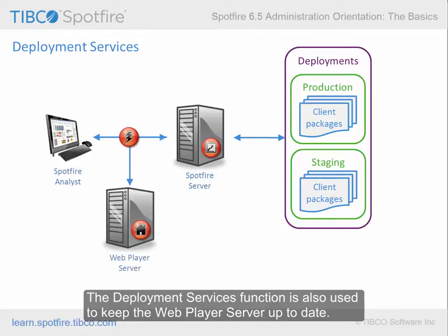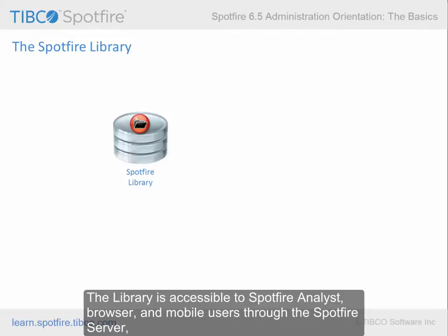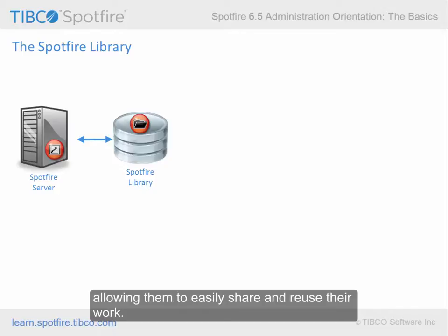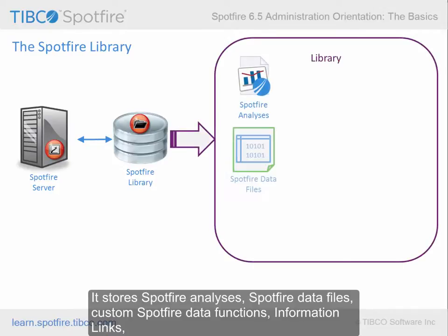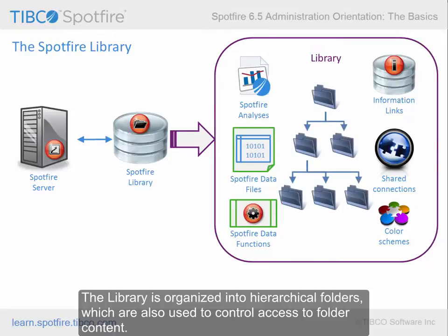The deployment services function is also used to keep the web player server up to date. As mentioned earlier, the Spotfire database contains the Spotfire library. The library is accessible to Spotfire Analyst, browser, and mobile users through the Spotfire server, allowing them to easily share and reuse their work. It stores Spotfire analyses, Spotfire data files, custom Spotfire data functions, information links, shared connections created with Spotfire native connectors, and visualization color schemes. The library is organized into hierarchical folders, which are also used to control access to folder content.